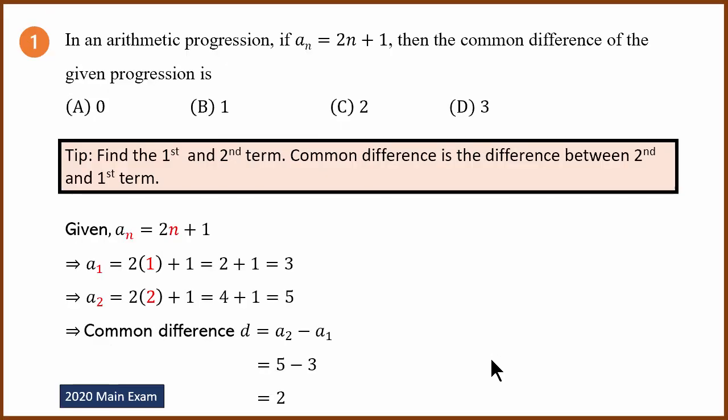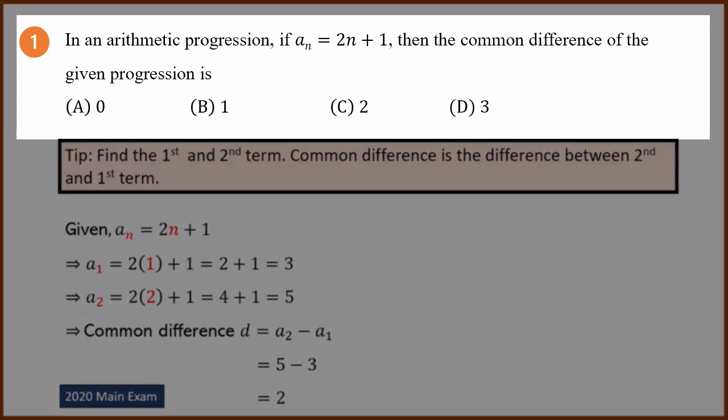First question. In an arithmetic progression, An equals 2n plus 1. Then the common difference of the given progression is? Options are 0, 1, 2, 3.